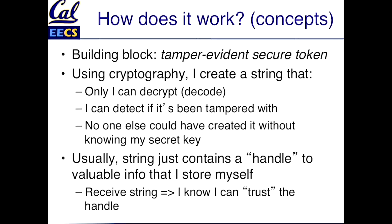The first building block is what's called a tamper evident secure token. Tamper evidence just means that there is a string that I can create that if you try to tamper with it by perturbing a few characters, it will essentially become an invalid string. It will become unusable. And the way I do this is I can create a string that, because there's a secret that only I know, it's a string that only I can decrypt. I'm the only one that can make use of it.